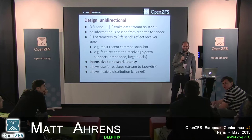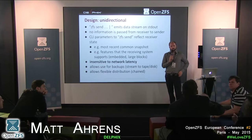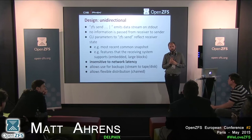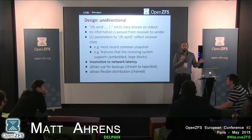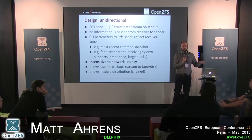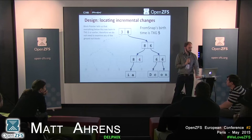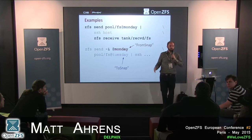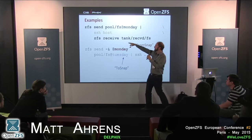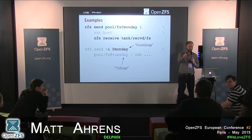For slow links where you want compression over the wire but not on local disk, the recommendation is: ZFS send | gzip | SSH, and on the other side: SSH host | gunzip | ZFS receive. This basically solves the problem today, even if resuming such a pipeline is a limitation that resumable send and receive will address.